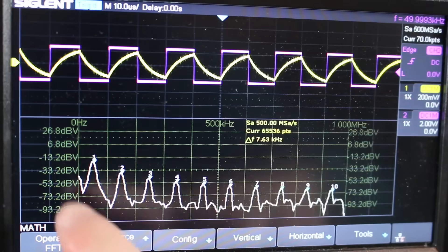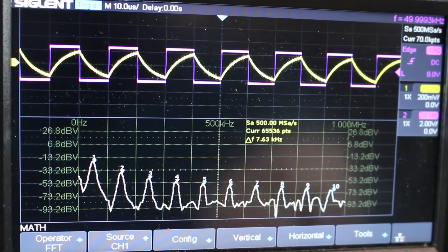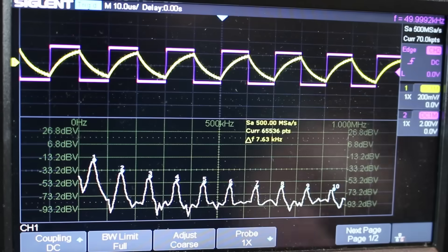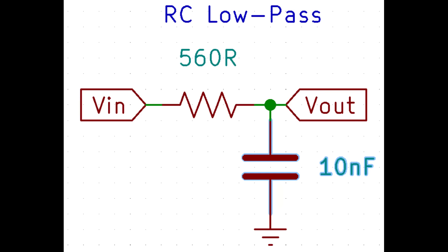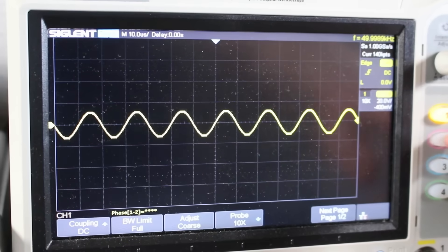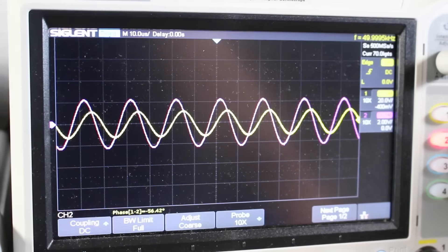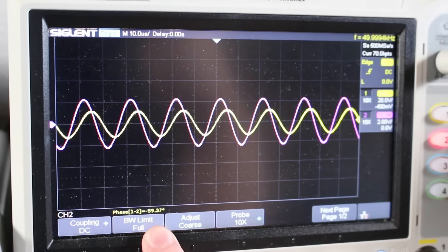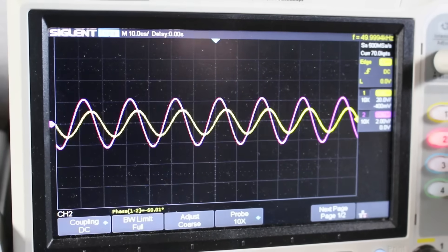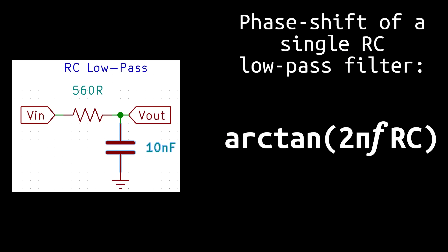We aren't done with those low-pass RC filters yet. Each RC filter comes with an output phase shift thanks to the complex impedance. Let's take a look at this specific filter which has a 560 ohm resistor and a 10 nF capacitor. Let's pass in a 50 kHz sine wave to the input, and as you can see, the output does not align with the input, and it's been shifted. At this specific frequency, 50 kHz, the sine wave gets shifted by roughly 60 degrees. You can find the phase shift of an RC low-pass filter with this equation: arc tangent of 2 pi frequency resistance times capacitance.